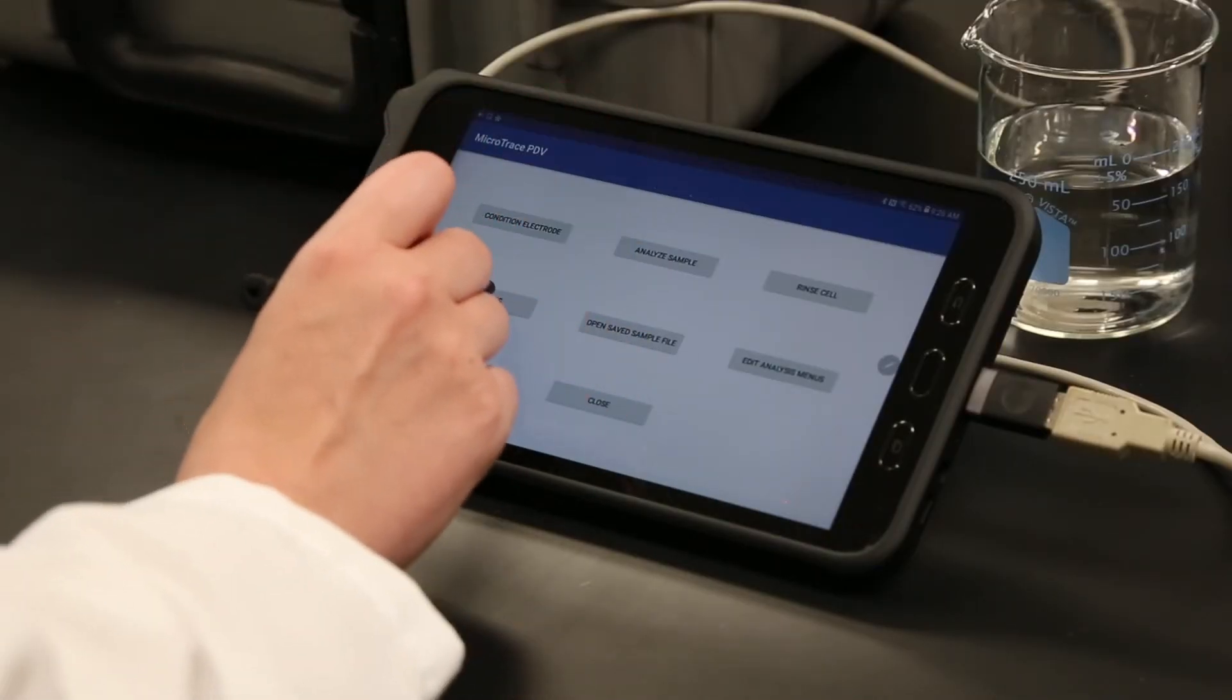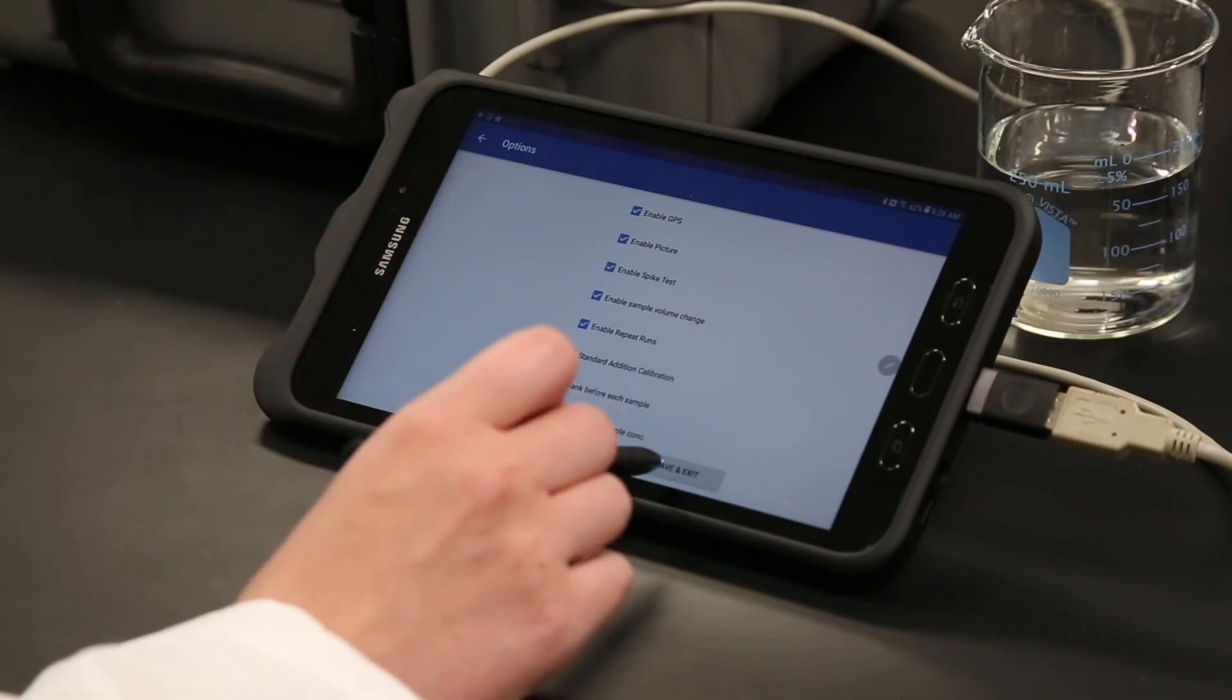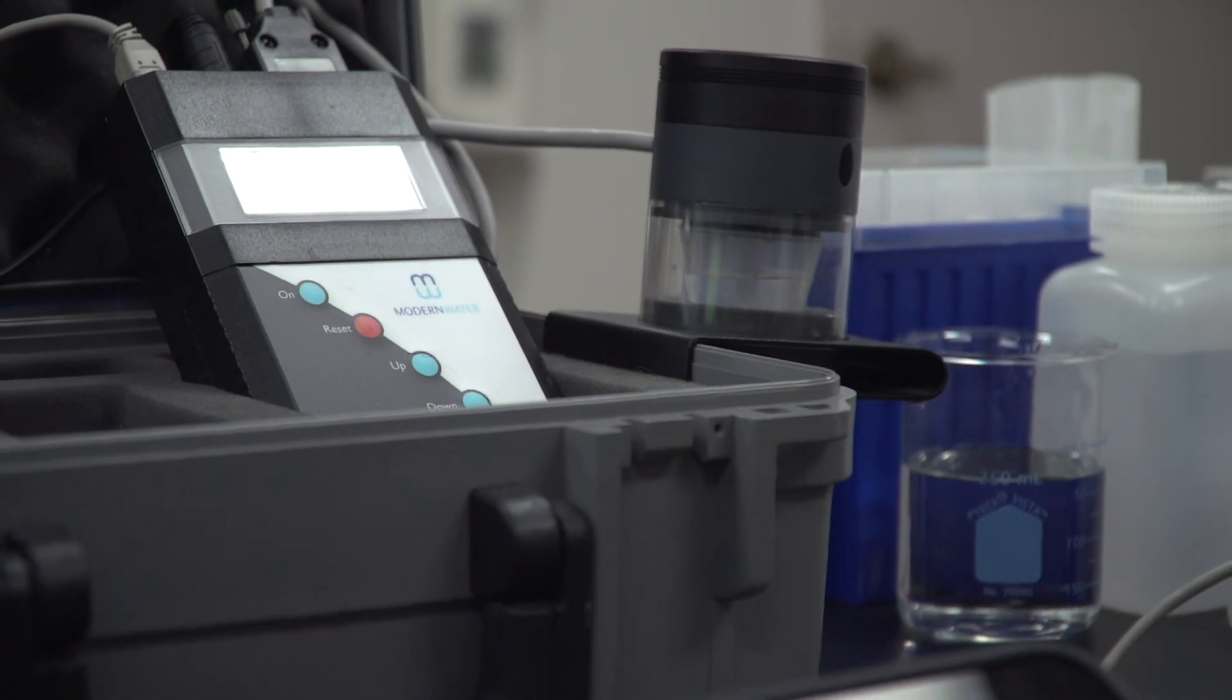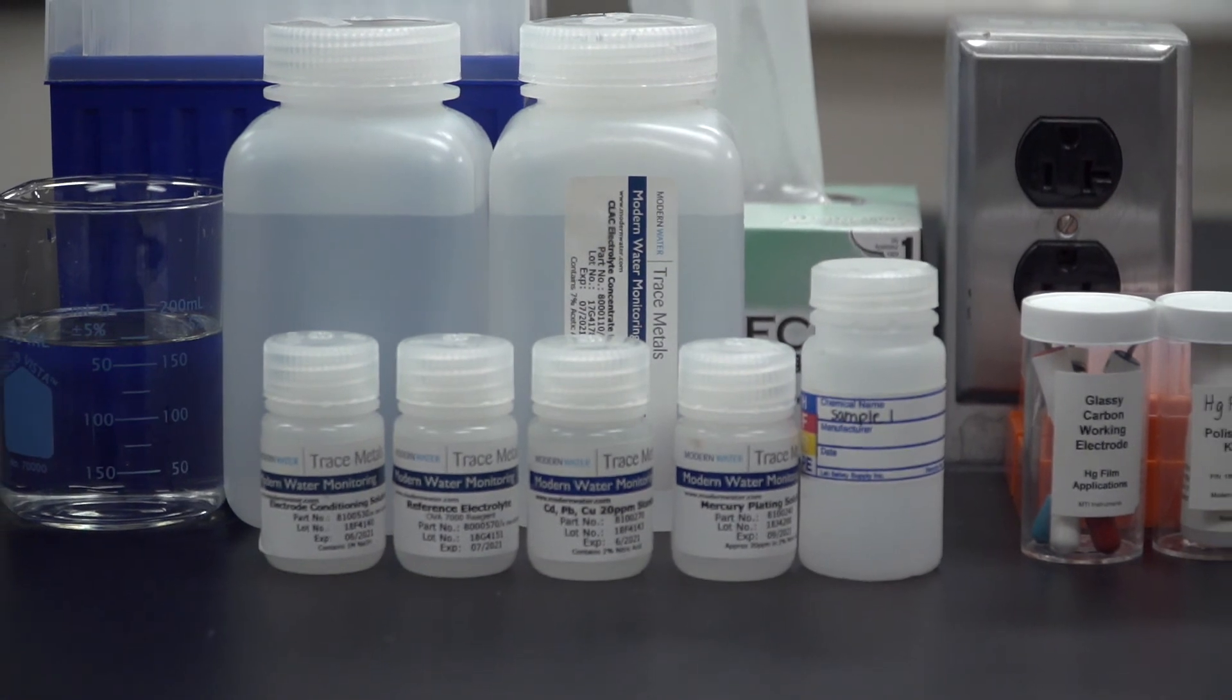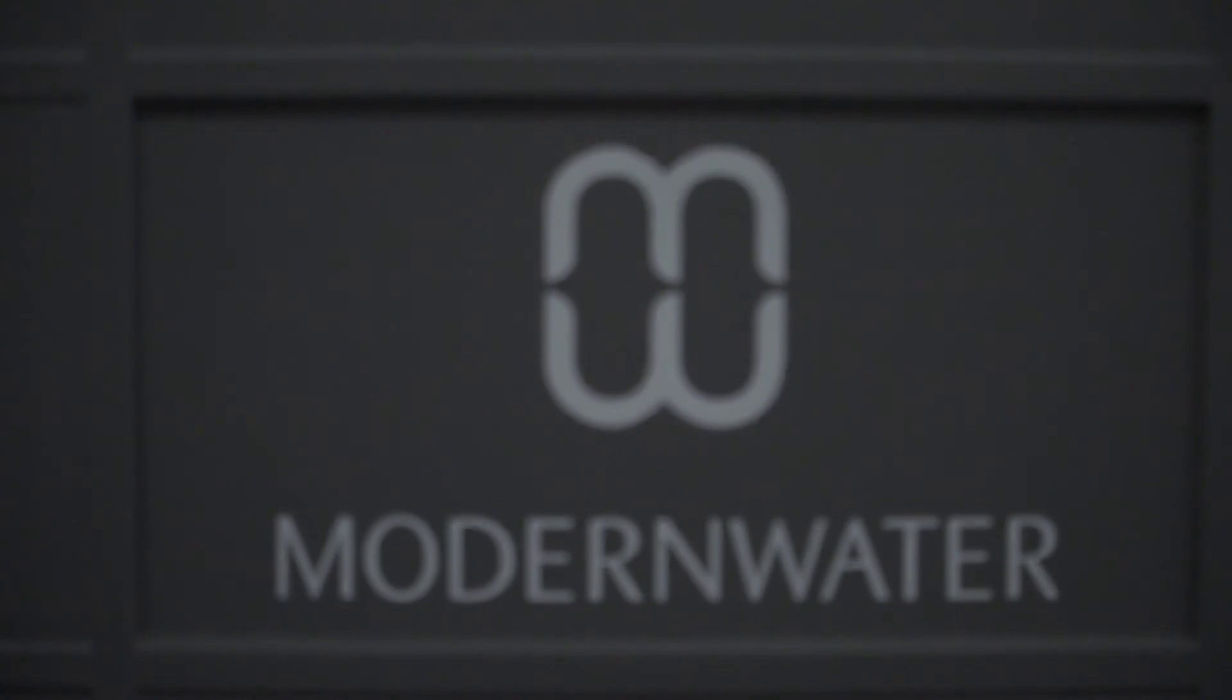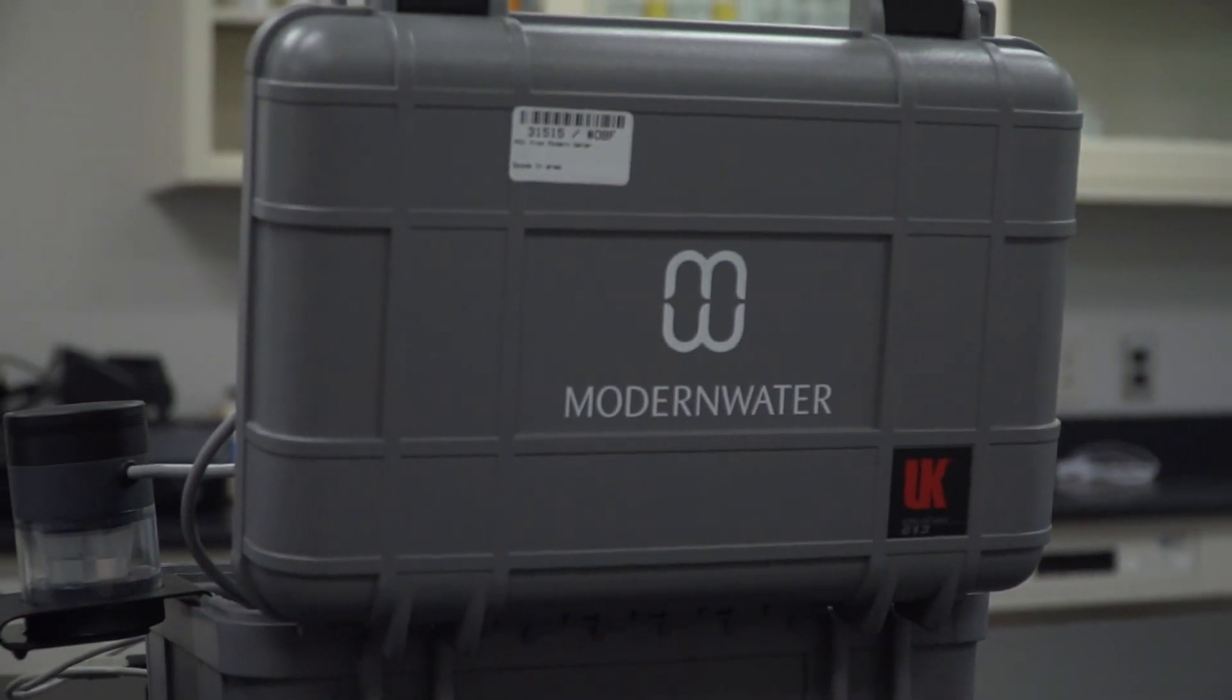Other analysis options such as sample spike testing, standard addition calibration, and other features are explained in the manual. The Microtrace PDV is a portable analytical instrument capable of detecting and analyzing over two dozen metals down to low parts per billion or sub parts per billion levels, providing rapid results allowing for the immediate identification and resolution of on-site problems.